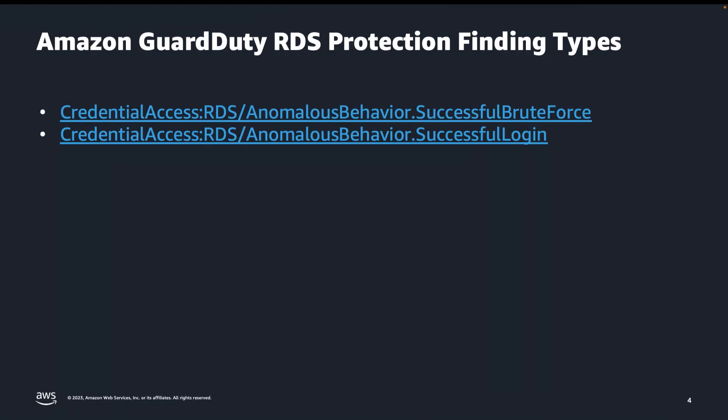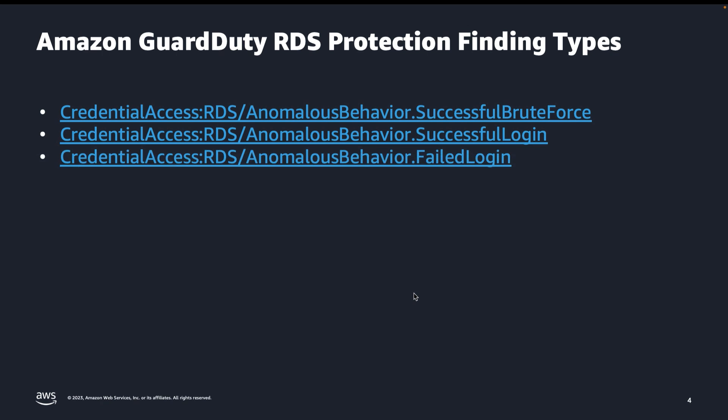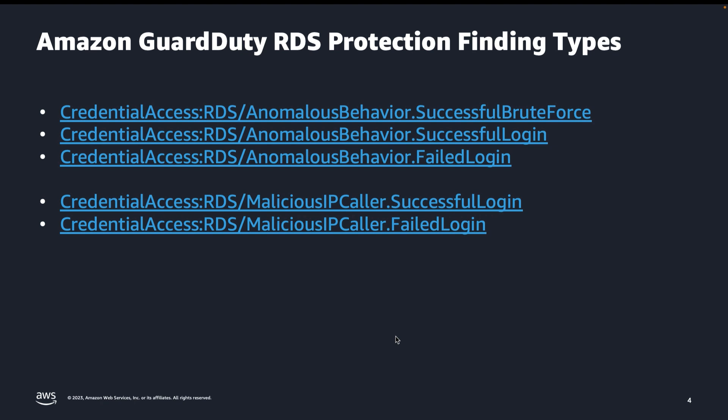Going back to our Amazon GuardDuty RDS Protection finding types, we can also see other findings such as RDS Anomalous Behavior Failed Login, where one or more anomalous failed logins were observed on an RDS database in your AWS environment. A failed login attempt from a public IP address may indicate that the RDS database has been subjected to an attempted brute force attack by a potentially malicious actor; however, this is different from a successful brute force attack finding. Further, if you have defined your own threat IP list — a list of known malicious IP addresses in Amazon GuardDuty — or if Amazon GuardDuty deems an IP address to be known malicious, you would get RDS Malicious IP Caller successful or failed login findings.